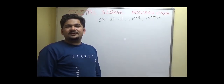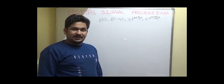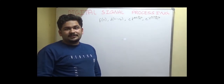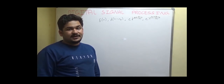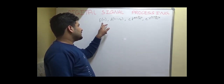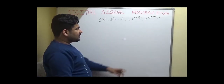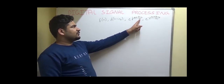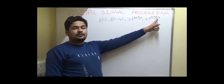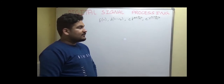Hello, welcome back to my channel Infotainment. In this video I will be showing you the method to compute the DFT of signals like δ(n), that is an impulse signal, δ(n minus n₀), e raised to the power j2π n₀ over capital N, and e raised to the power minus j2π n₀ over capital N. Let us see one by one.